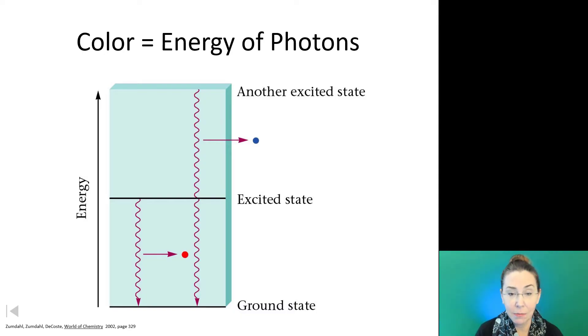The colors that are emitted completely correspond to the distance that those electrons are falling to go back down to their ground state. In this case, this atom when excited would show two colors of light being emitted by these two possible distances falling in the energy levels.